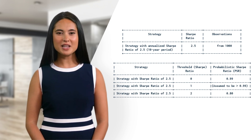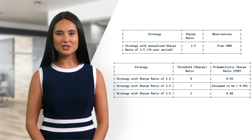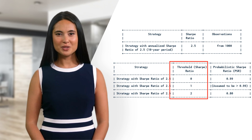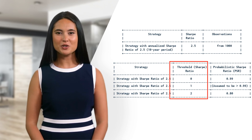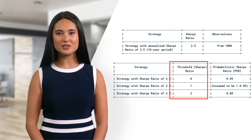This shows that the PSR depends on our choice of threshold and how confident we want to be in our strategy's performance. A higher threshold means a higher standard for success but also a lower probability of achieving it. The PSR can help us compare different strategies, choose ones with a high probability of meeting our expectations, and avoid false positives — strategies that appear good but are actually lucky or overfitted.